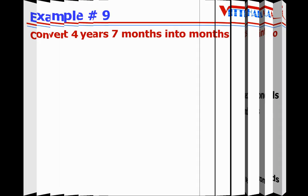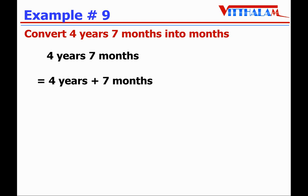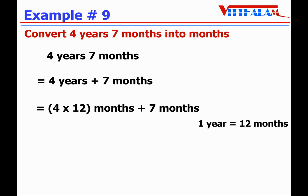Let's take another one: convert 4 years 7 months into months. 4 years 7 months is 4 years plus 7 months. The relation between years and months is 1 year equals 12 months. So 4 multiplied by 12 equals 48 months, plus 7 months. 48 plus 7 equals 55 months.